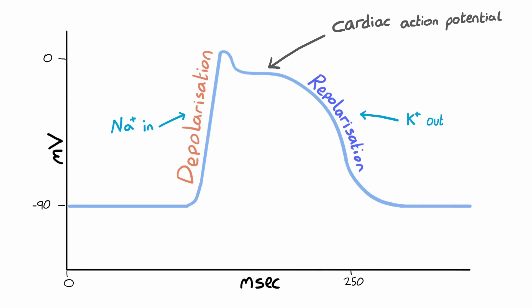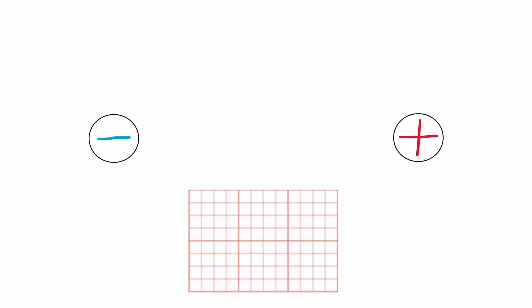It's also these depolarization and repolarization events that move the recording needle up or down on the ECG giving us positive or negative deflections. A wave of depolarization moving from a negative to positive electrode creates an upwards deflection on the ECG. As does a wave of repolarization moving from positive to negative. This might sound a bit confusing and takes a bit of time to get your head around.